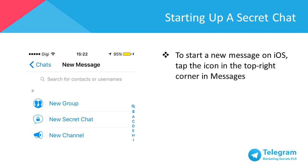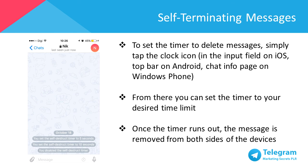To start a new Secret Chat on iOS, tap the icon on the top right corner in Messages. For Android, swipe right to open the menu, then tap New Secret Chat. For Windows Phone, tap the plus icon in the chats list, then New Secret Chat. To set the timer to delete messages, tap the clock icon in the input field on iOS, the top bar on Android, or the chat info page on Windows Phone. From there, you can set the timer to your desired time limit.